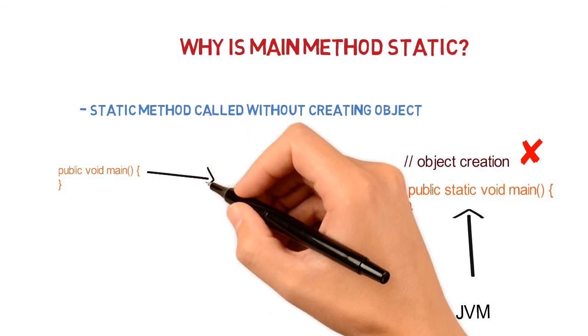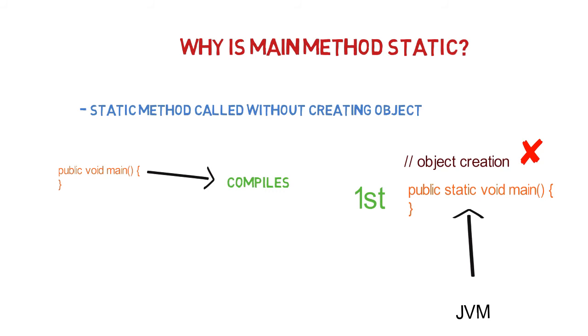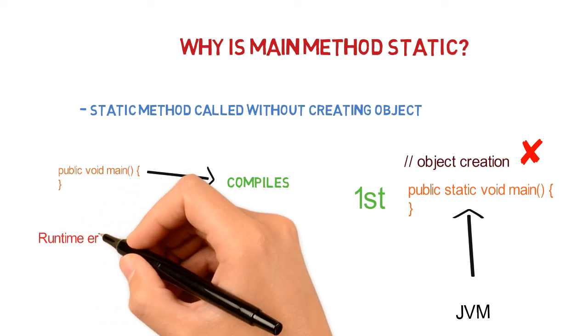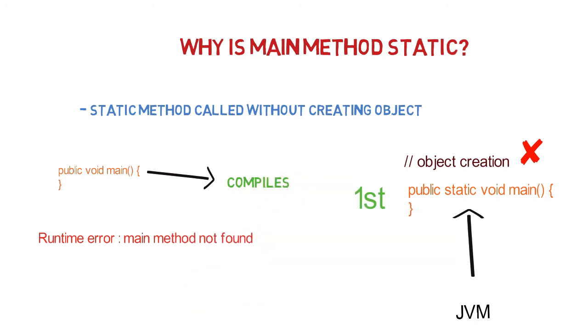If we do not add static keyword with the main method, the program is going to compile fine. It will not throw any compilation error because then it will be treated as a normal method. But when you run the program, the compiler won't be able to find the main method because to find the main method, compiler needs exact signature provided by Java. So basically you have to have the static keyword with the main method.